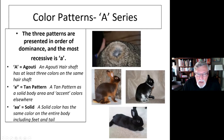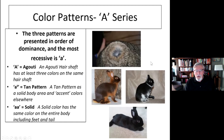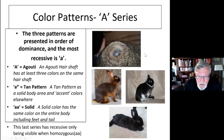So this is the A series — these are the patterns. A rabbit is either going to be agouti, solid, or tan pattern. You may say, well, I've seen some that are shaded or other colors — I'll talk about that when we get to the extension series. The last series — solid — is recessive only. To see it, you have to have two recessive little a's: homozygous. That's the A series.